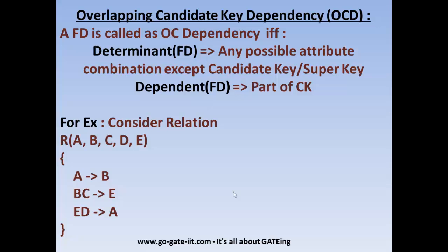Before we jump to the important normal form — Boyce-Codd normal form, or BCNF — we should understand one more type of dependency called overlapping candidate key dependency, or OCD. A functional dependency is called overlapping candidate key dependency if and only if the determinant part is any possible attribute combination except the candidate key or the super key, and the dependent part should be only a part of a candidate key, not the complete candidate key.